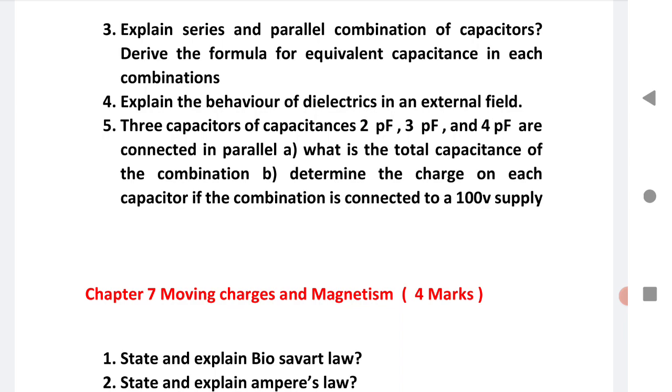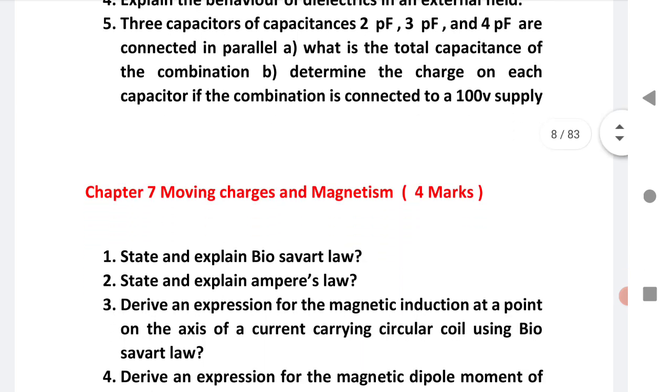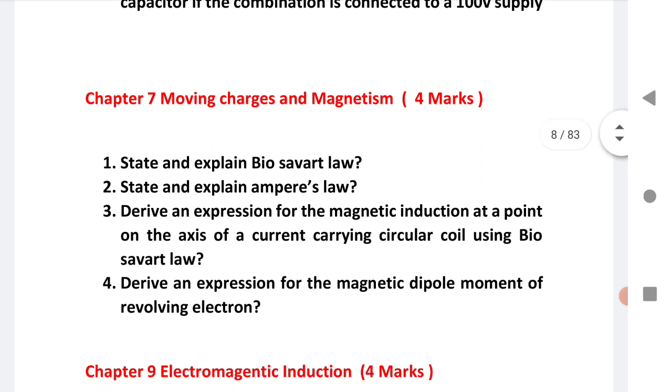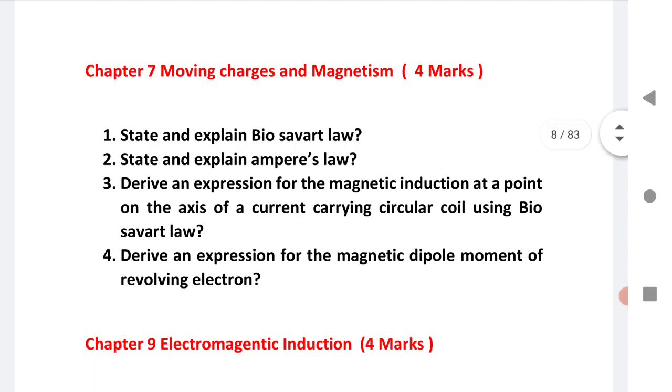Next, seventh chapter is Moving Charges and Magnetism: state and explain Biot-Savart law. Third is magnetic induction at a point on the axis of a current carrying circular coil using Biot-Savart law, very important question. Fourth is also very important - all four are very important and will definitely give you 4 marks.